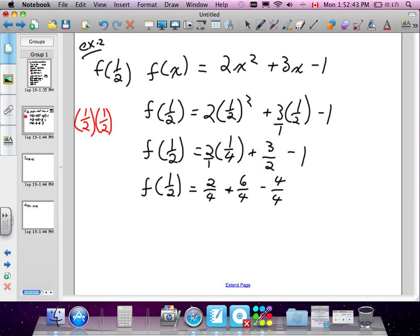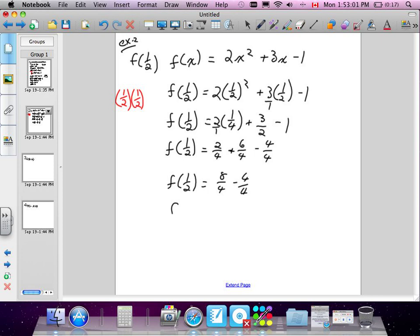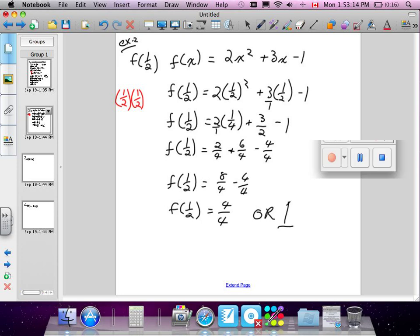So, I've turned all the fractions that have common denominators, because I have to add and subtract them. So, f at 1 half is equal to 2 plus 6 is 8 over 4. And 8 over 4 minus 4 over 4. F at 1 half will equal 4 over 4. Or, how else can I write that? Or the number 1. It's so much easier just to do 0.5. If you found that easier, that's fine. I prefer using fractions.